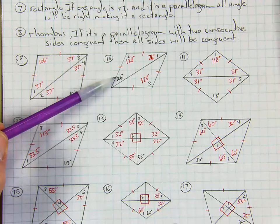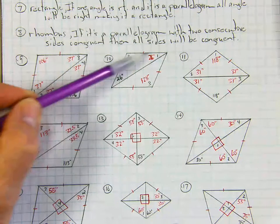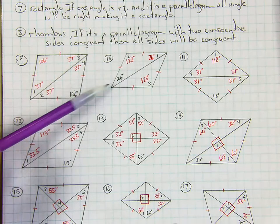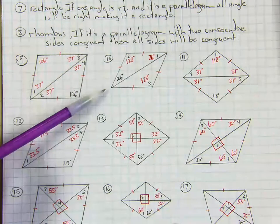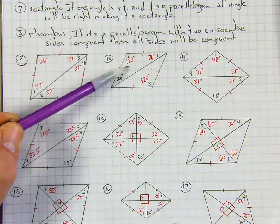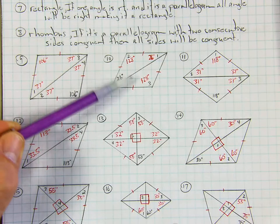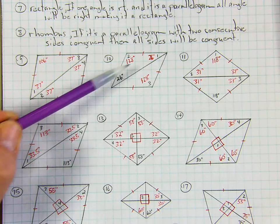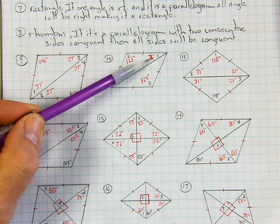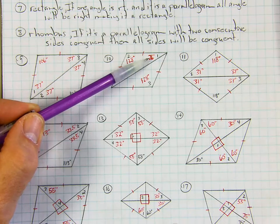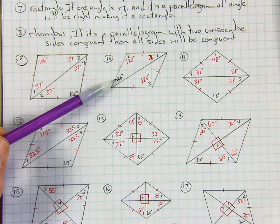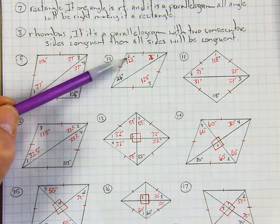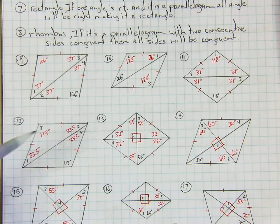On number 10, they started us off with one of the base angles, which is 26. That's another isosceles triangle because the diagonal splits it into two isosceles triangles. So angle 1 is 26. Adding 26 and 26 and subtracting from 180, angle 2 would be 128 and angle 3 would be 128 because those are the opposite angles.